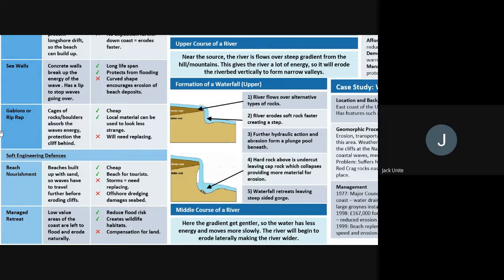Managed retreat means we retreat the line rather than holding it. We allow the least important areas — perhaps low-value farmland — to flood, and may even remove existing defenses. When that area floods, water goes to areas of lower value, reducing impact on settlements and infrastructure. The key positive is it reduces flood risk and can create new salt marshes and natural habitats, benefiting organisations like the RSPB. The downside is that farmers and landowners must be compensated for losing their land.